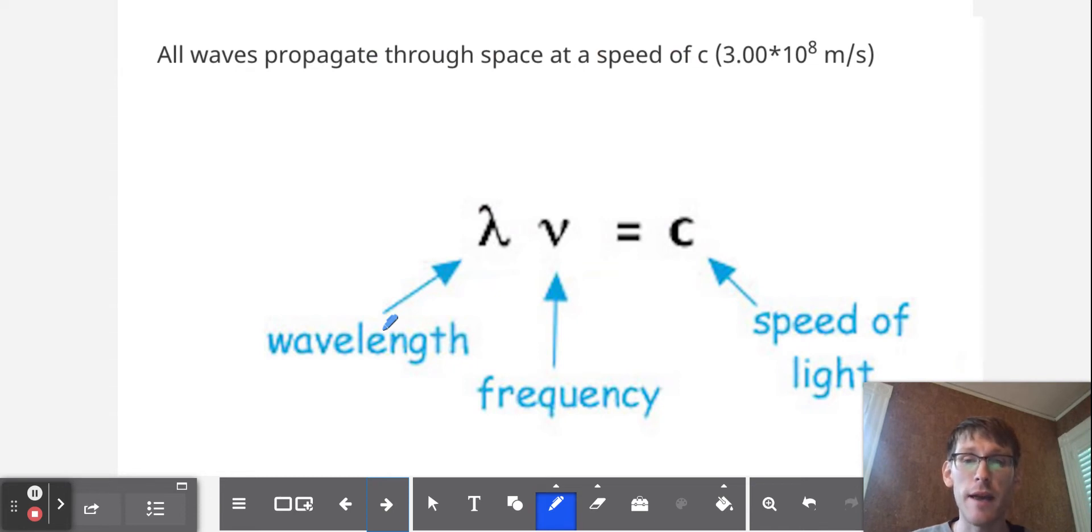So as I mentioned, wavelength and frequency are inversely related to each other. And actually, their product for any wave is always going to be the speed of light, which is 3.00 times 10 to the 8th meters per second.